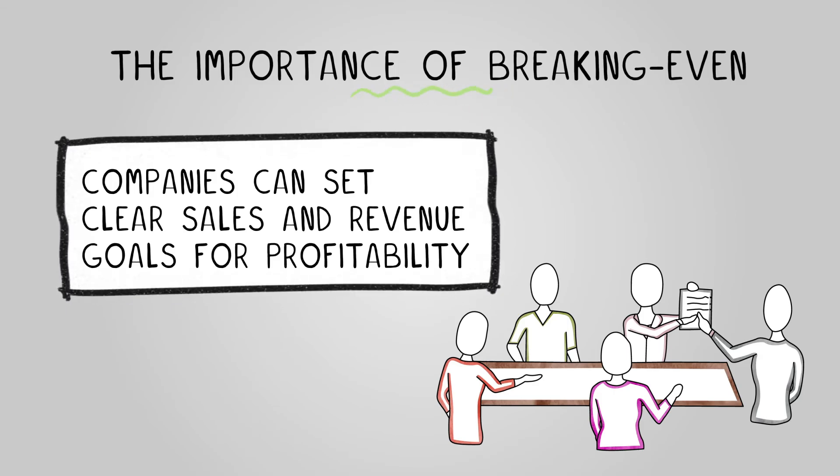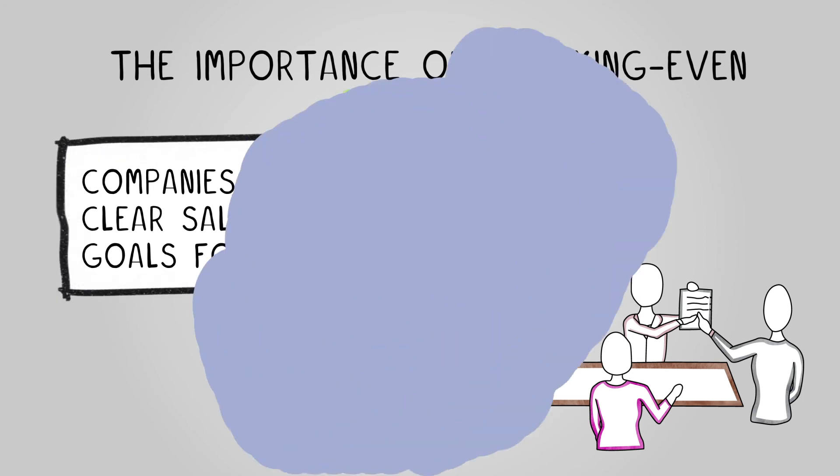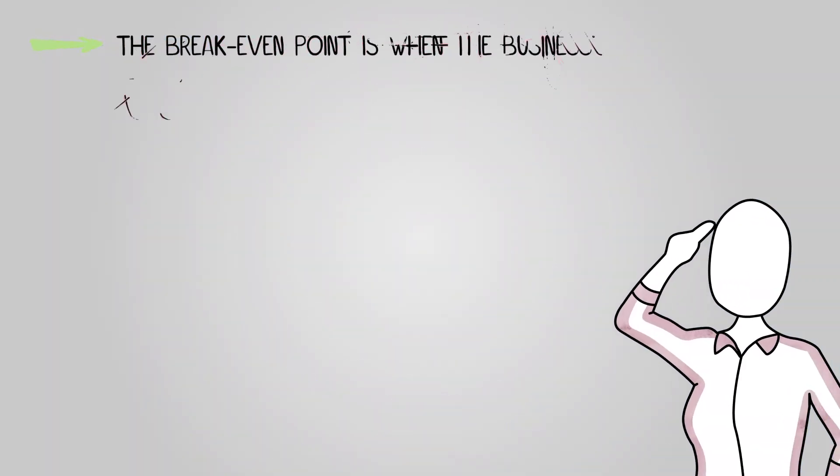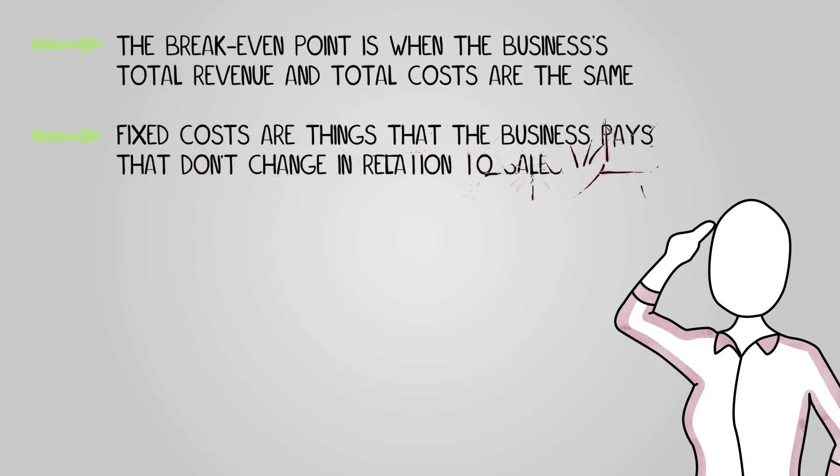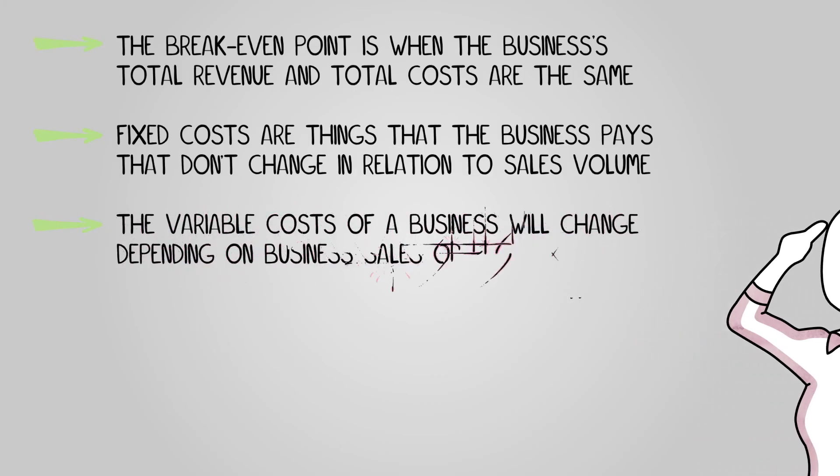In conclusion, the break-even point is when the business's total revenue and total costs are the same. Fixed costs are things that the business pays that don't change in relation to sales volume. The variable costs of a business will change depending on business sales or production volume.